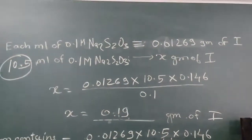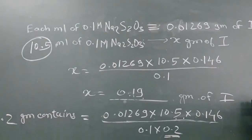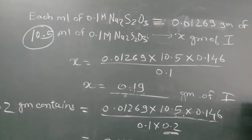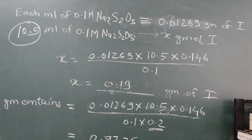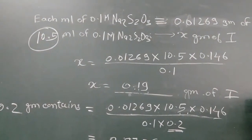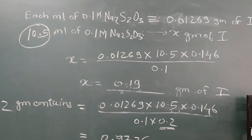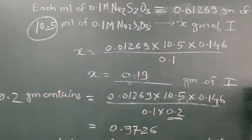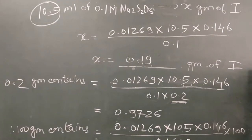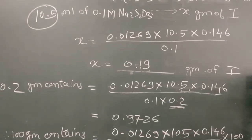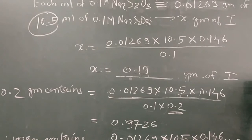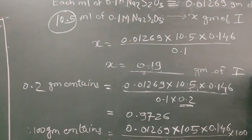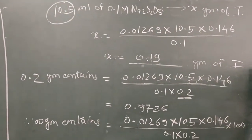For the percent purity calculation: each ml of 0.1 molar sodium thiosulfate is equivalent to 0.01269 grams of iodine. The mean assay burette reading is 10.5 ml. So X = 0.01269 × 10.5 × (calculated molarity 0.146 / 0.1). This equals 0.19 grams of iodine.